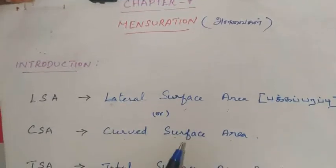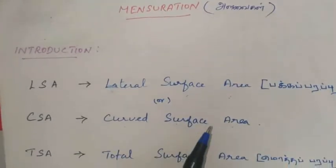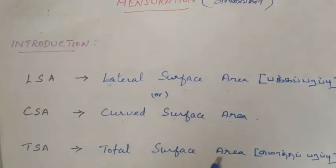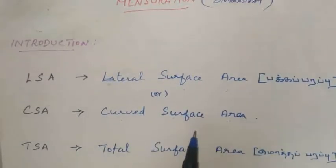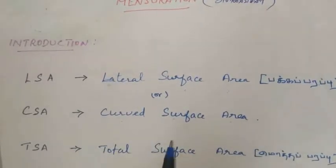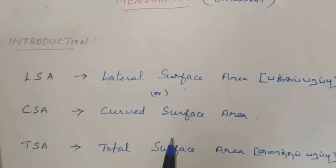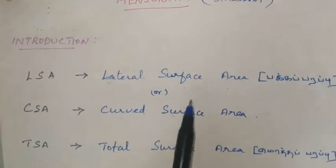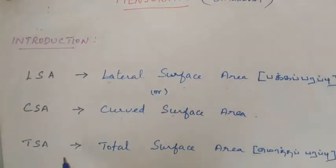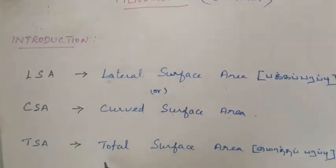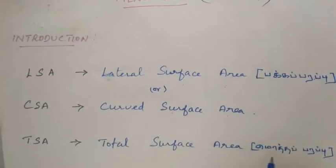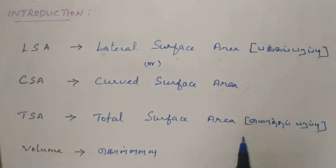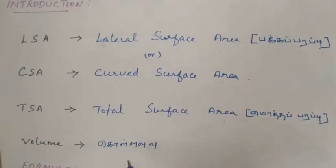Plane sides are found in shapes like a square and a cuboid. In the cuboid, one side is a curved surface area. Curved surface area refers to the curved portion of a solid shape.